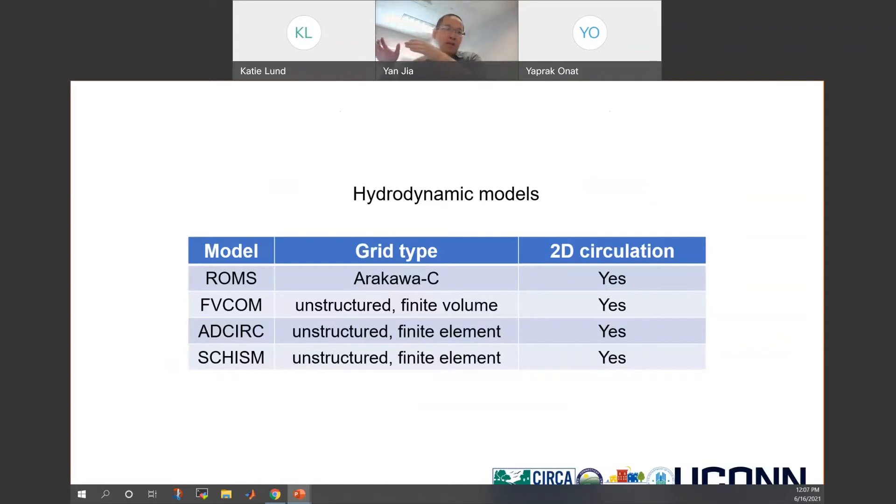So they have large flexibility. That will save computational time. For all these four models, in my test, I'm using the two-dimensional circulation model, which saves a lot of time compared to 3D simulation, but still it can provide accurate water level predictions.